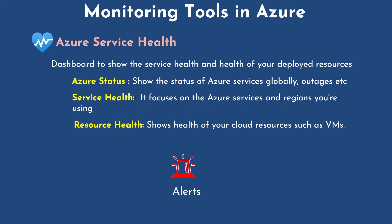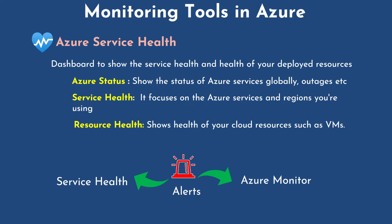You can even set up Service Health alerts to notify you when service issues, planned maintenance, or other changes may affect the Azure services and regions you use. And using Azure Monitor, you can also configure alerts to notify you of availability changes to your cloud resources — for example, whether a resource went from healthy to unhealthy due to a service outage. These types of alerts can be set easily using Service Health alerts and Azure Monitor alerts.